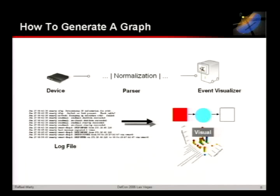So how does graphing work? There are basically two steps. You have a device that generates a log file or events — you record them, and you want to make a visual representation: a bar chart, a link graph, a tree map, or something. You take that log file, parse it to find source addresses, destination addresses, ports, and then throw it into an event visualizer like Afterglow to generate a graph.